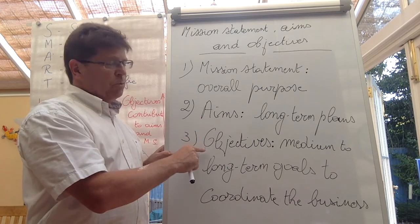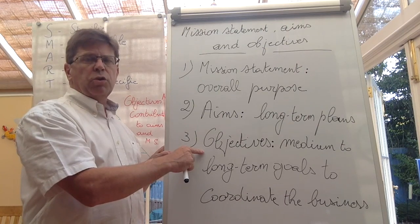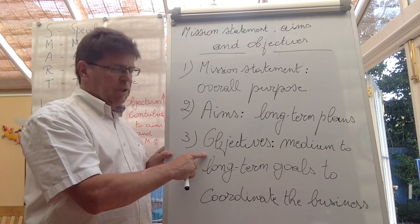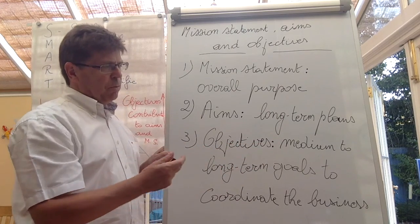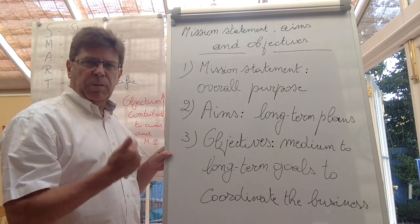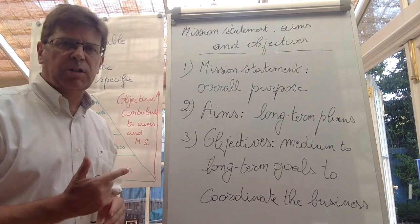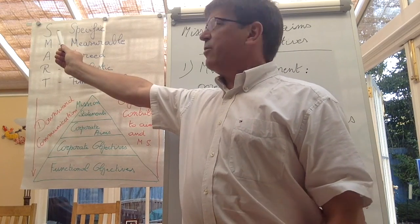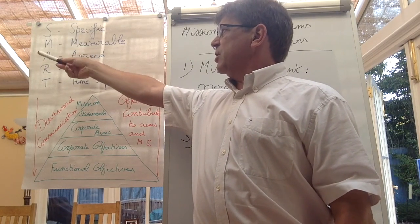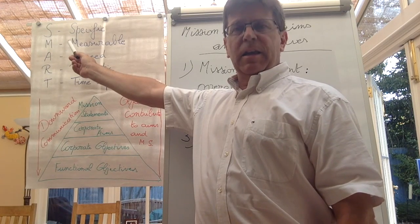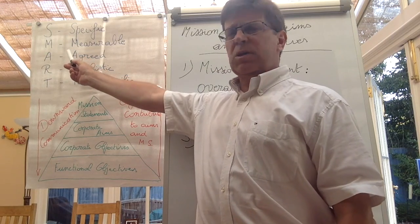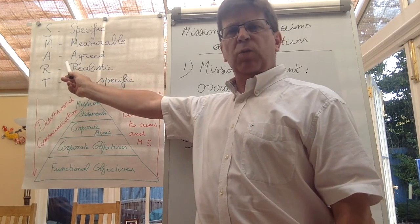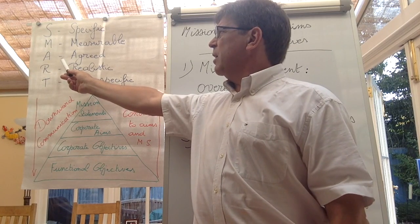Objectives, on the other hand, are definitely numerical — whenever figures are mentioned in a statement, those are objectives. Corporate objectives are medium to long-term goals to coordinate the business. They are numerical and they have to be SMART. SMART is an acronym: Specific — you need to be very sure what exactly you are measuring, whether it's revenue or profit. Measurable — there have to be concrete figures involved. Agreed — when objectives are agreed upon, people commit to them, making it easier to reach the goal.